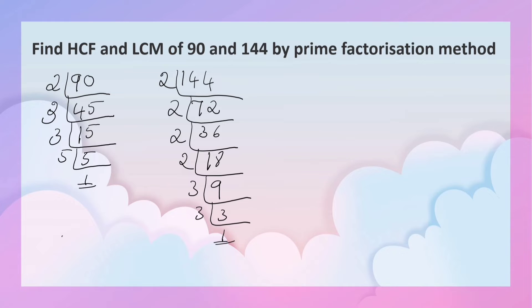So the prime factors of 90 is 2 × 3² × 5. 144 equals 2⁴ × 3².